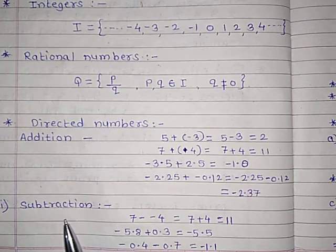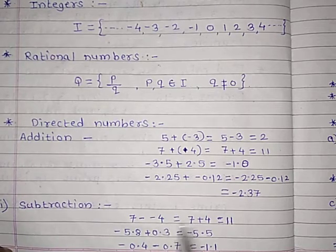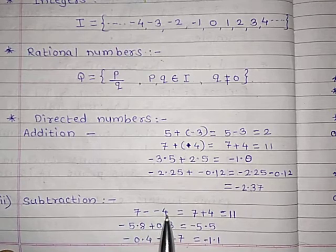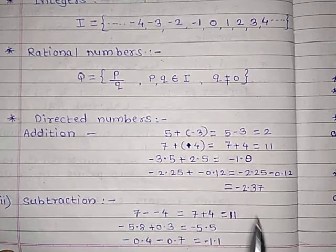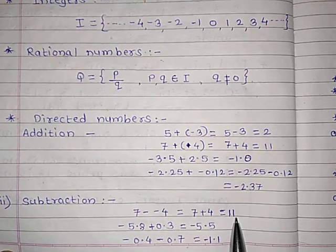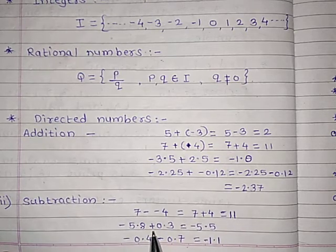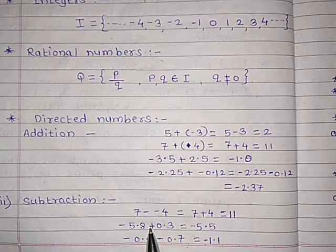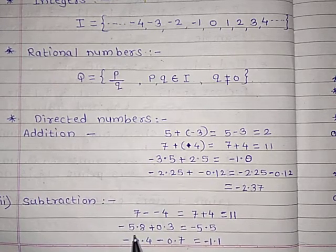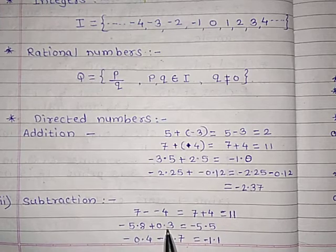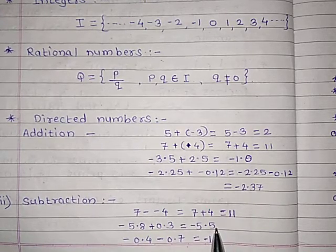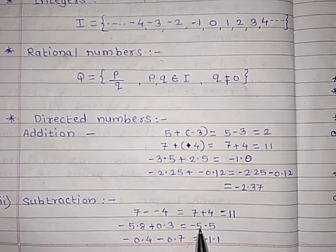Next concept: subtraction. 7 minus minus 4. Minus and minus becomes plus, so it will be 7 plus 4, which is 11. Now subtraction of decimals: minus 5.8 plus 0.3. Both the signs are different, so we have to subtract: 5.8 minus 0.3. Bigger number is 5.8, smaller is 0.3. 8 minus 3 is 5, 5 minus 0 is 5, with negative sign — that is minus 5.5.